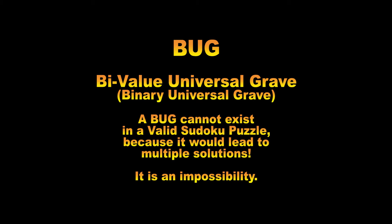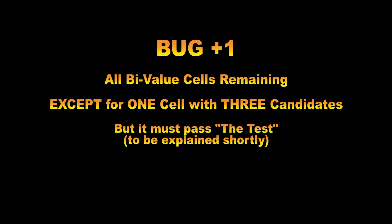A bug cannot exist in a valid Sudoku puzzle. So what you may find instead is that you have something that looks almost like a bug, with nearly all bivalue cells remaining, except for one cell that contains three candidates. Then you need to check and see if one of those three candidates appears exactly three times in either the row, the column, or the block in which it lies. If so, then you have a bug plus one, and the candidate that appears three times in at least one house must be set in that cell to avoid the bug.